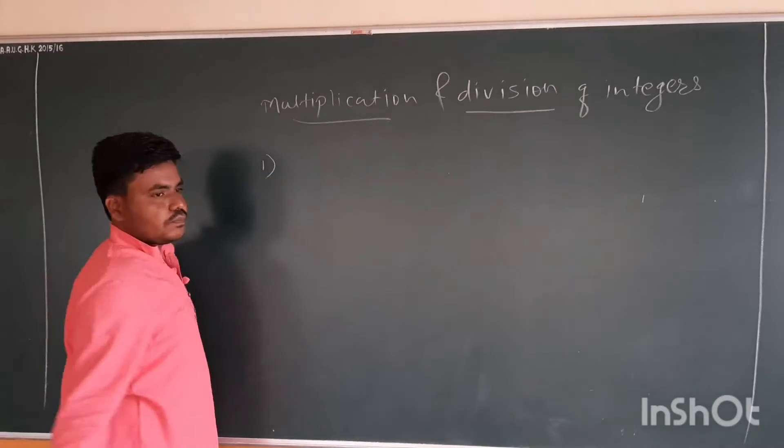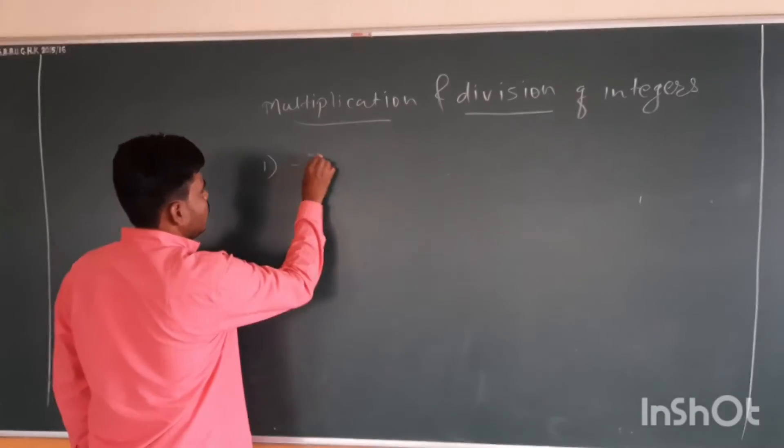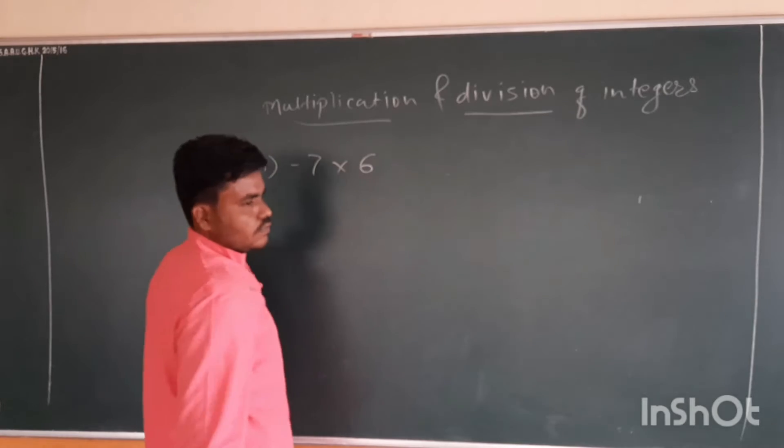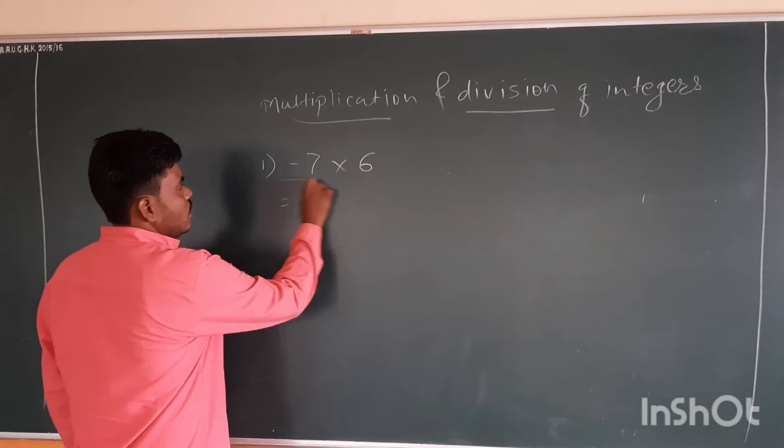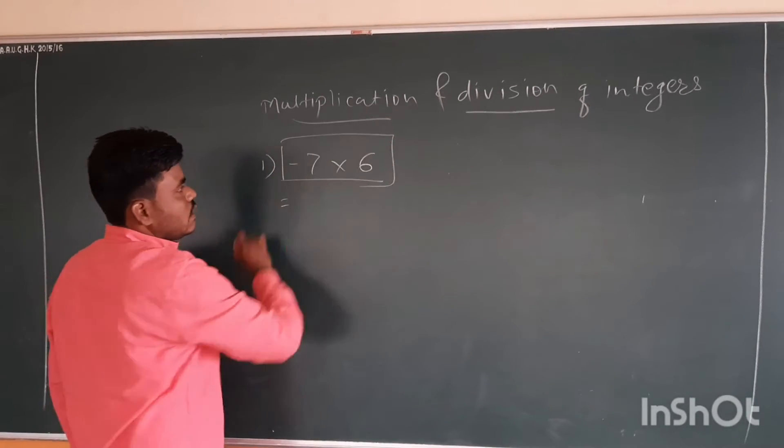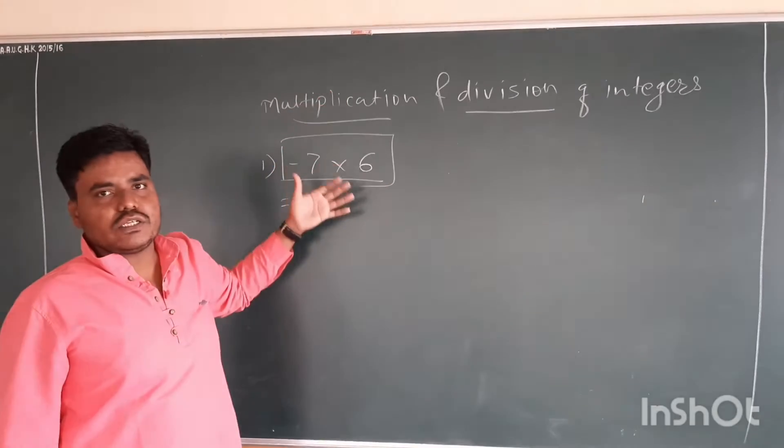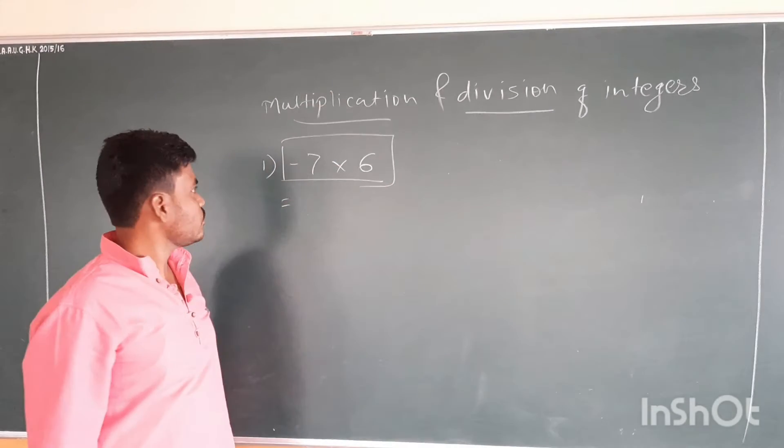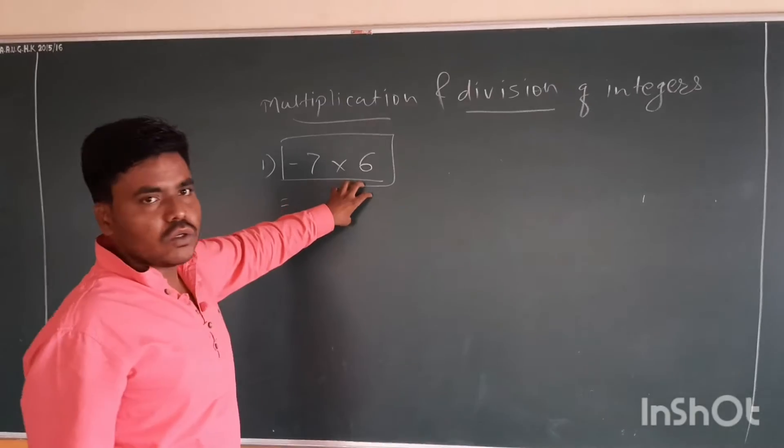We are making the first problem. Here is the problem: minus 7 into 6. These are integers and we are going to do multiplication of these integers. Minus 7 into 6.